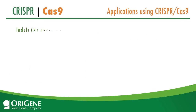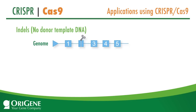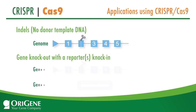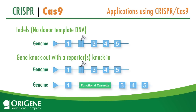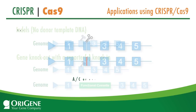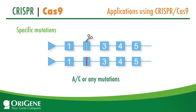Applications for CRISPR-Cas9 are endless. You can generate an indel variant library at a targeted locus. You can knock out a target gene and simultaneously knock in a functional cassette such as a mammalian selection marker or a fluorescent marker, and you can introduce pre-designed mutations.